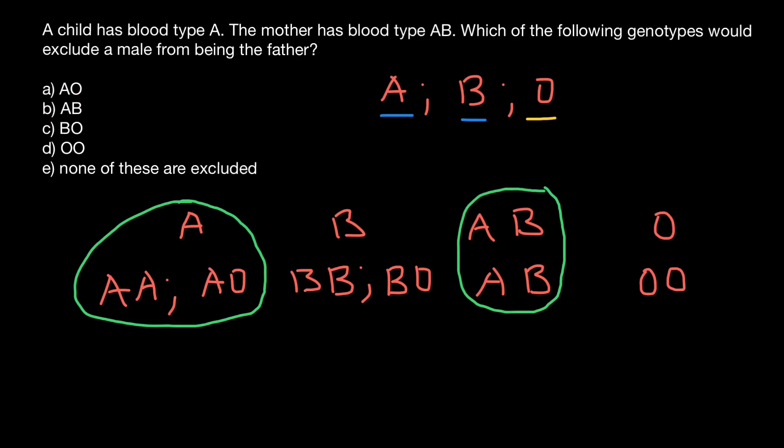As for a father with blood group AB, mother can give allele A and father can give allele A, so the child would be AA — blood group A. If the father's genotype is BO, mother can give allele A and father can give allele O, making the child's genotype AO — blood group A.